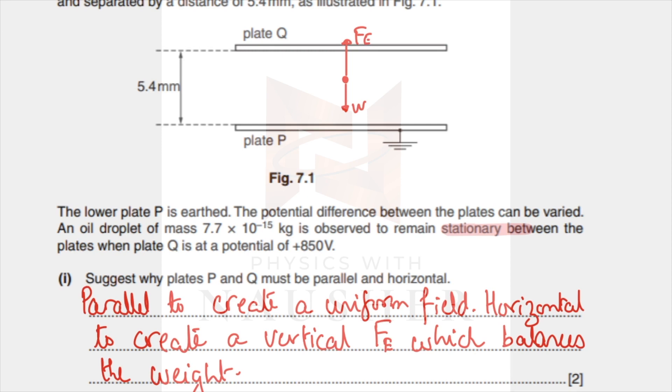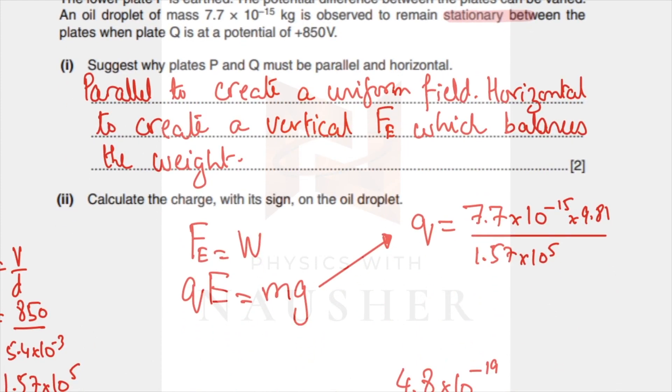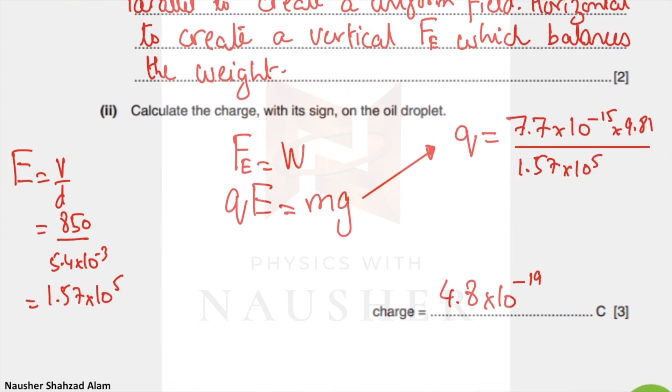Now calculate the charge. FE and weight must be equal, so FE equals W. You know FE is qE and W is mg, so your charge would be mg over E. How do you find E? E is potential difference over distance: 850 over 5.4 times 10 to minus 3. Plug that in, along with m and g values, and the charge should be 4.8 times 10 to minus 19.